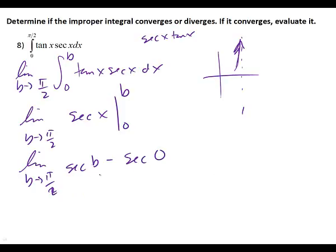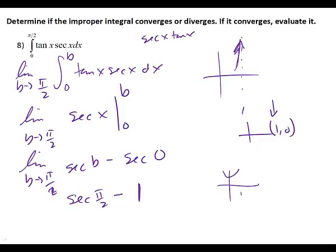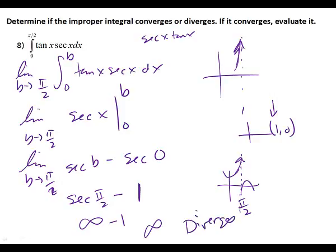What am I going to put in for B? Pi over 2. Secant of pi over 2 minus secant of 0. Secant is the reciprocal of cosine, and secant of 0 is 1 over 1, which is 1. Remember the secant graph — where do you think that asymptote is? Pi over 2. Which means secant of pi over 2, just like tangent of pi over 2, goes to infinity. So if I have infinity minus 1, that answer is infinity. Does it converge or diverge? It diverges.